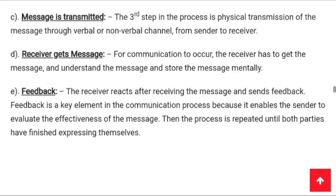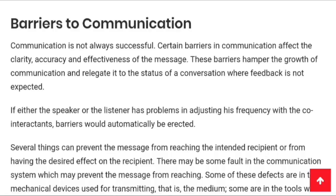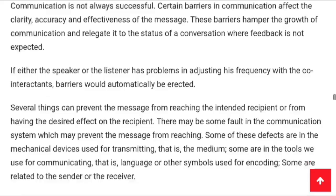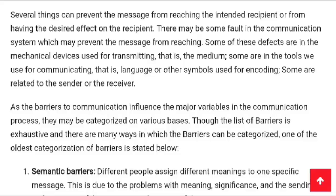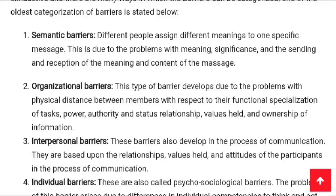There are also barriers of communication — problems, obstacles, and hurdles that interfere with communication. To make communication effective, there should be no barriers or gaps. The first is the semantic barrier: different people assign different meanings to one specific message. This is due to problems with meaning, significance, and context. A particular word may carry different meanings, so there should be a clear description in the message to avoid it being taken the wrong way.